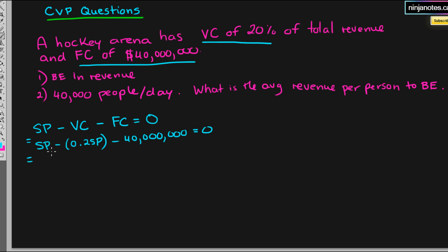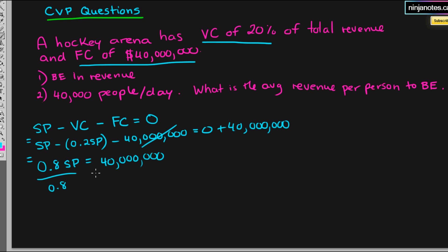When we simplify, we have SP minus 0.2 SP. SP alone means one unit, so we get 0.8 SP. Move the 40 million to the other side, and we get 0.8 SP equals 40 million. To find total revenue, we divide by 0.8 to isolate for sales, which gives us $50 million of total revenue needed to breakeven.